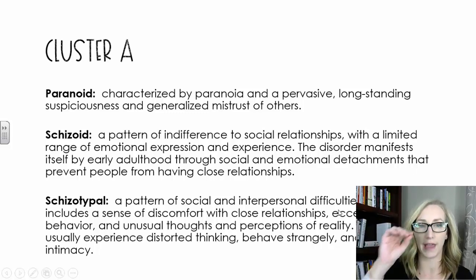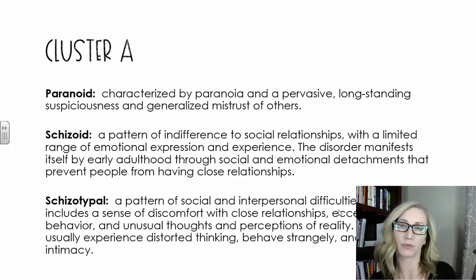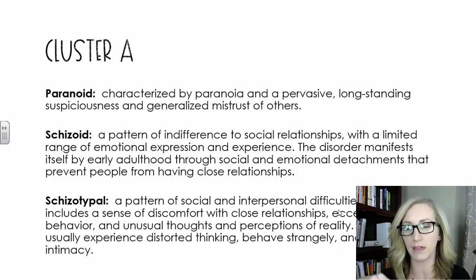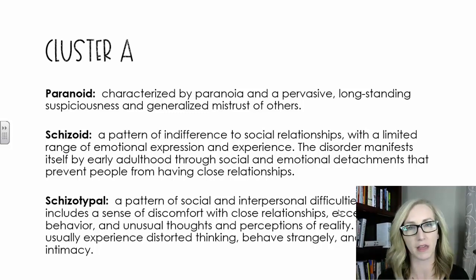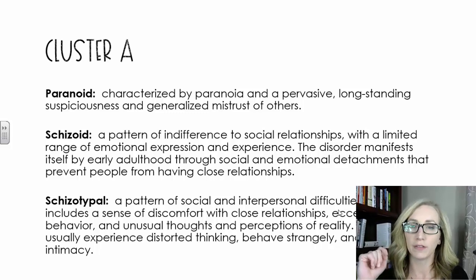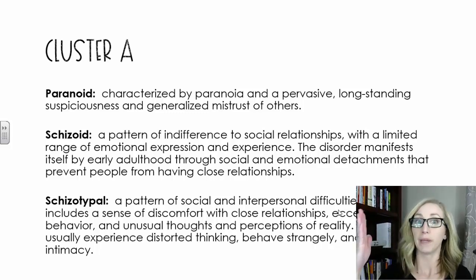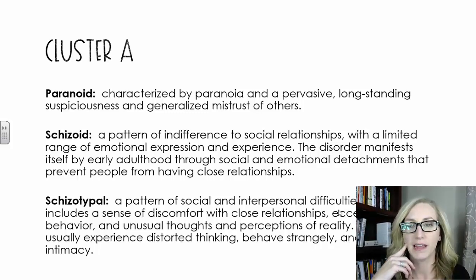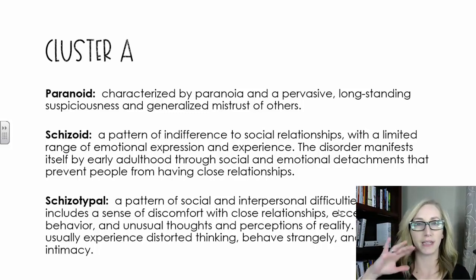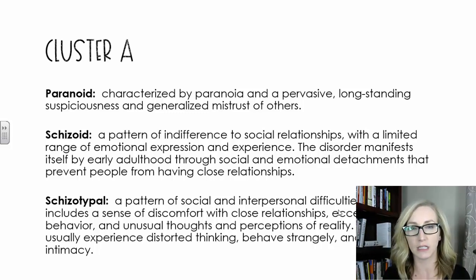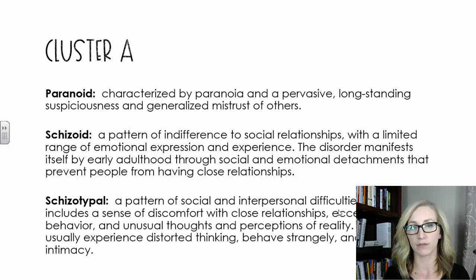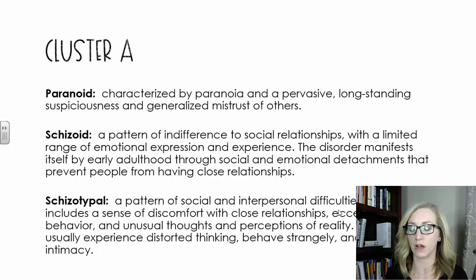Cluster A has three types. Paranoid is characterized by paranoia and a pervasive, longstanding suspiciousness and generalized mistrust of others, so they're always kind of looking over their shoulder and accusing others of having it out for them. Schizoid is a pattern of indifference to social relationships with a limited range of emotional expression and experience — they don't really fluctuate in their emotions at all and don't have social relationships.